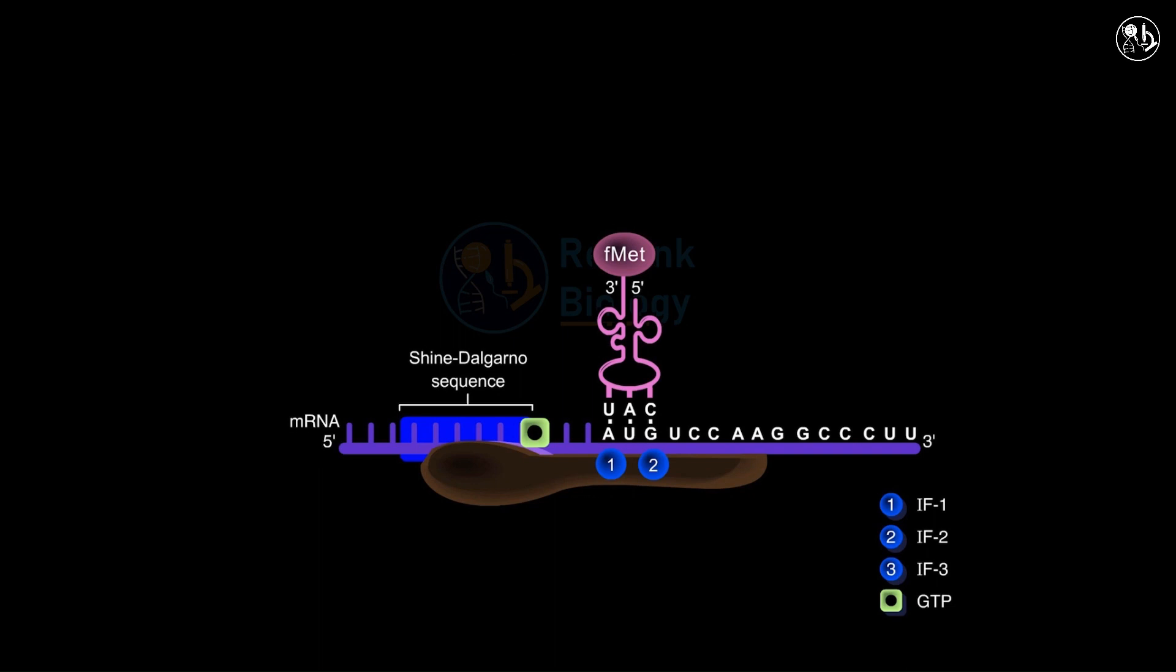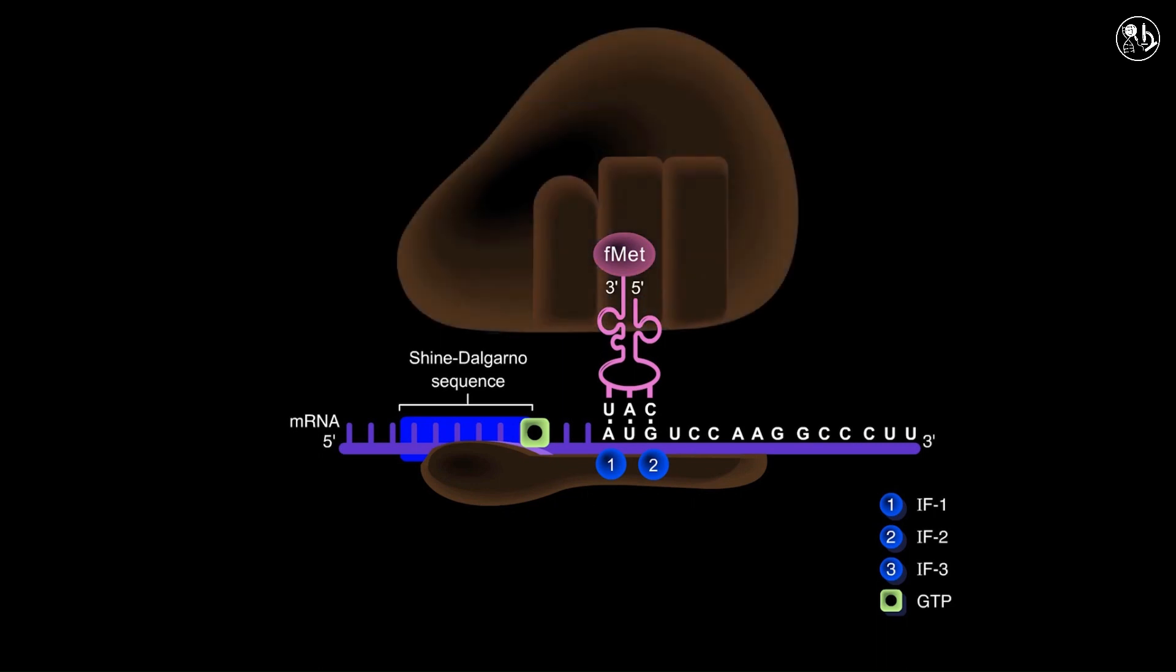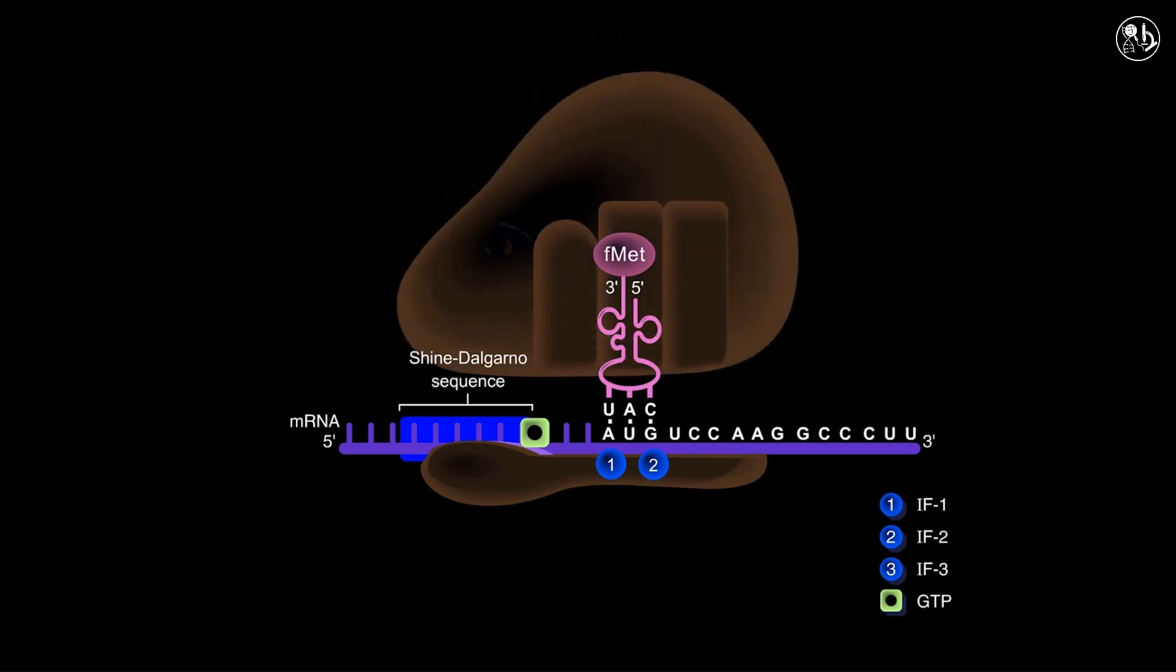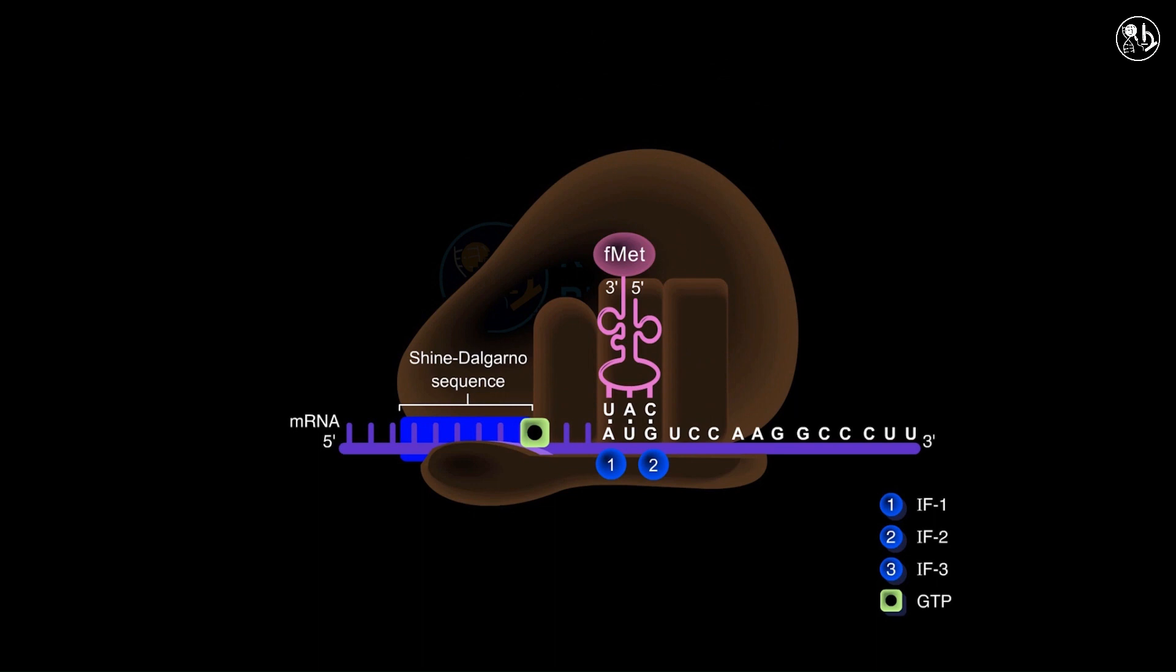Finally, the large ribosomal subunit or the 50S subunit binds to the 30S initiation complex. GTP is hydrolyzed and IF1 and IF2 are released. The final complex is called the 70S initiation complex.